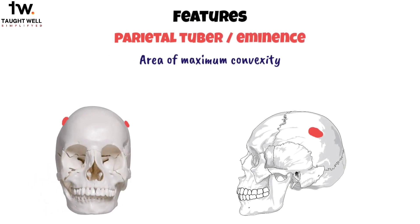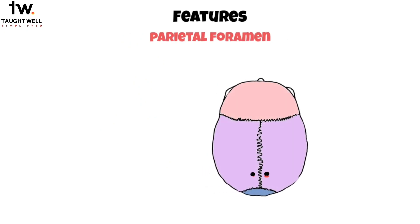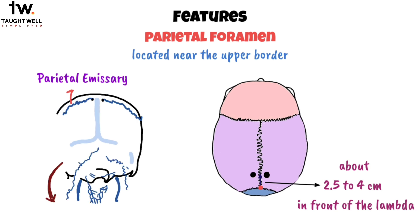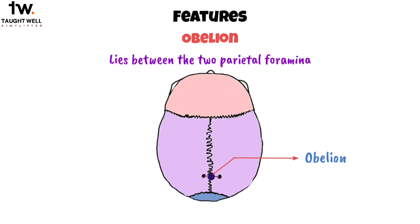The parietal tuber or eminence refers to the area of maximum convexity on the parietal bone, and unfortunately it's also a common site for skull fractures. On each side of the skull, there's a parietal foramen located near the upper border, about 2.5–4 cm in front of the lambda. These foramina allow an emissary vein from the scalp to enter the superior sagittal sinus. The obelion is the point on the sagittal suture that lies between the two parietal foramina.